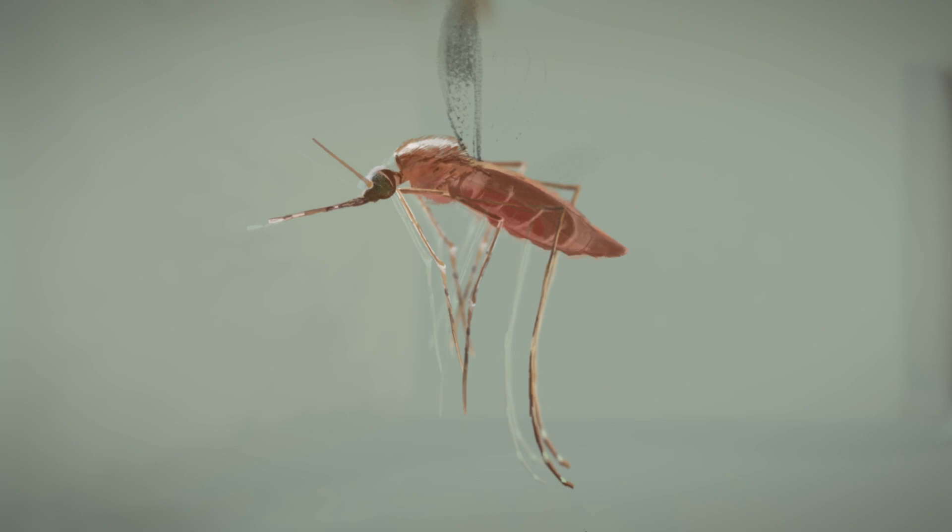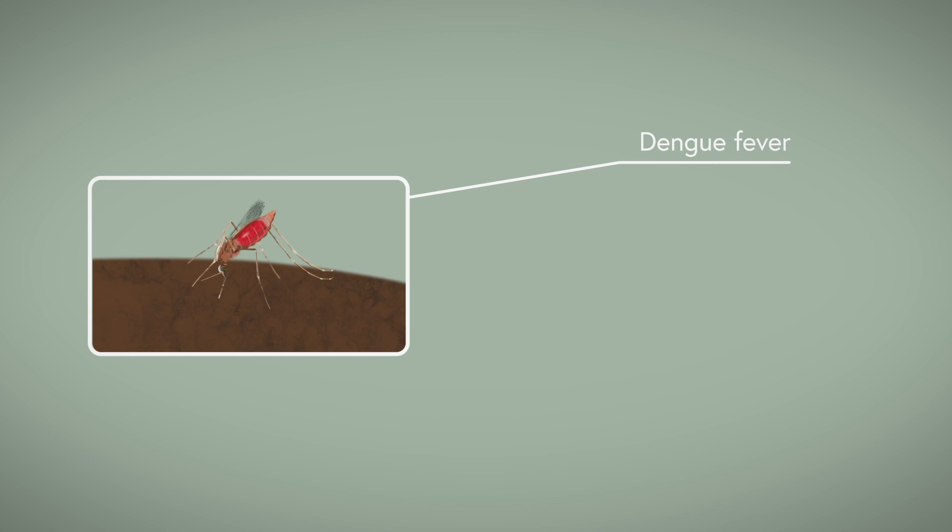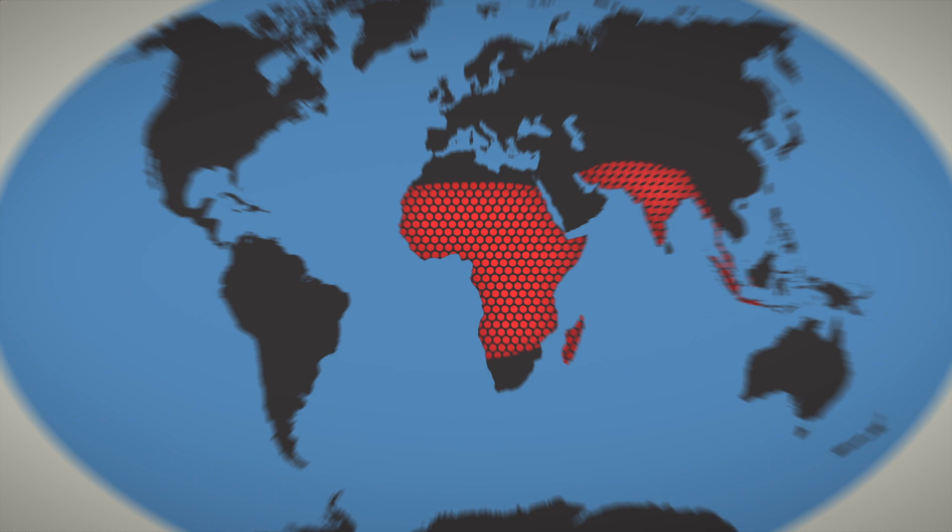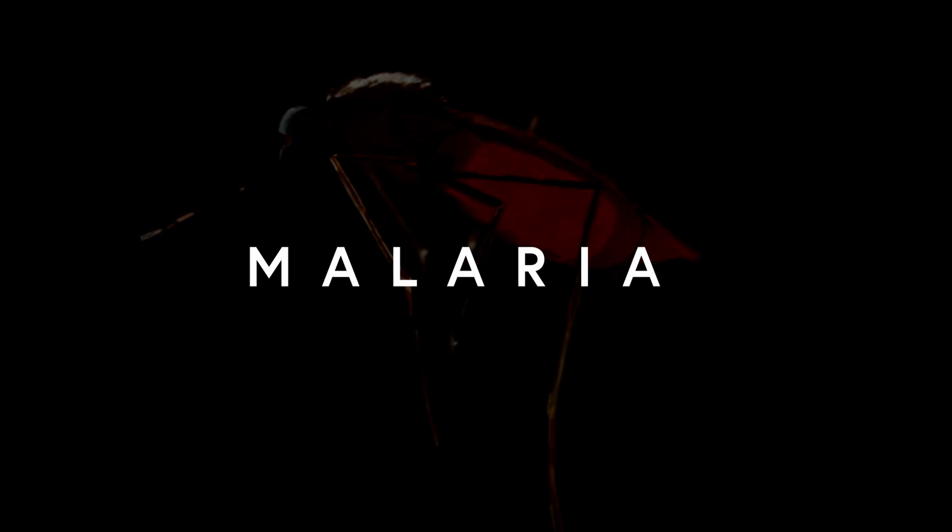Mosquitoes. Tiny creatures with a huge impact. Mosquitoes are responsible for transmitting diseases such as dengue fever, chikungunya, and zika. They also transmit one of the most deadly diseases of them all: malaria.